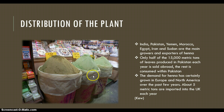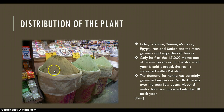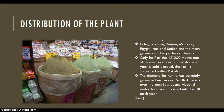It depends on who you're asking how exactly they make it, but from what I've read, they mix it with lemon juice or oil or some sort of liquid base to make it more of a paste so that it can be applied to the skin. Here you can see there are three different tones: a dark, a medium, and a light. Now, the main growers and exporters of henna are India, Pakistan, Yemen, Morocco, Egypt, Iran, and Sudan.